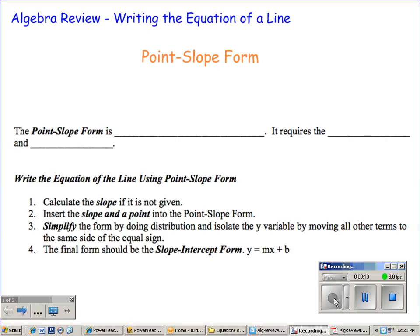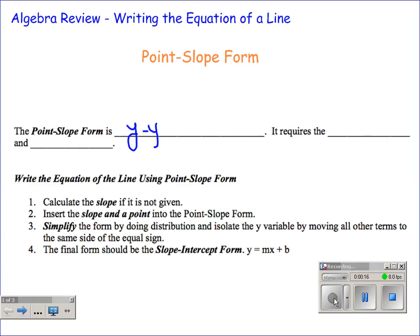We're going to have a very short lesson today dealing with point-slope form. It says the point-slope form is y minus y1 equals m times x minus x1. It requires the slope and a point.